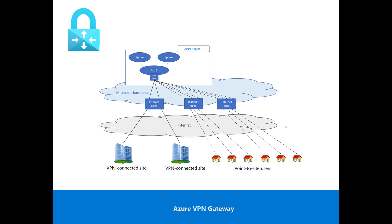Point-to-site VPN is commonly used by remote workers with portable computers. The second type is site-to-site VPN, which allows you to connect one network to another with traffic passing across an encrypted VPN tunnel. This is commonly used to connect on-premises sites to Azure, or Azure virtual networks to each other — for example, in a hub-and-spoke architecture.